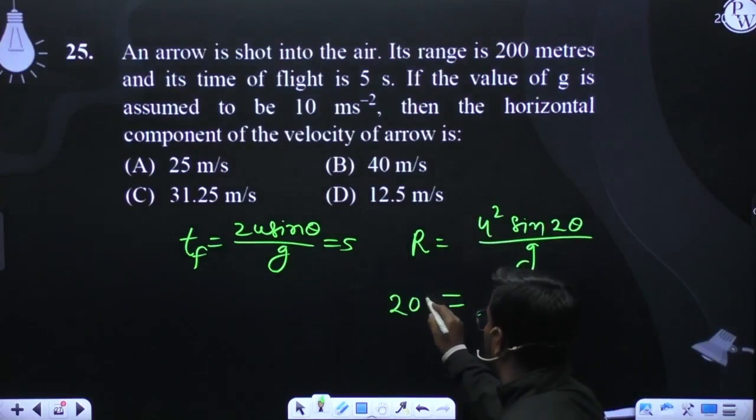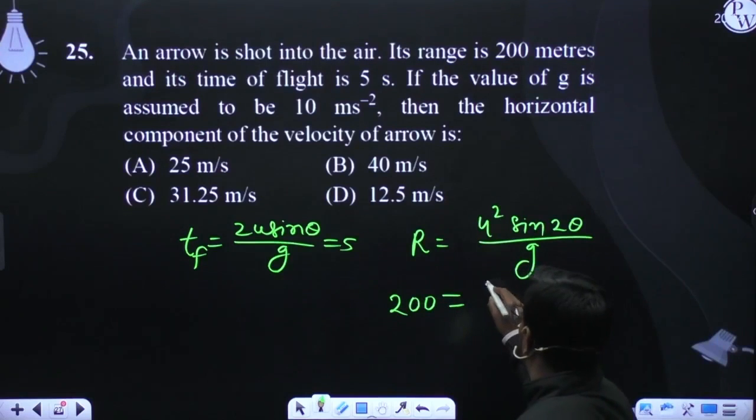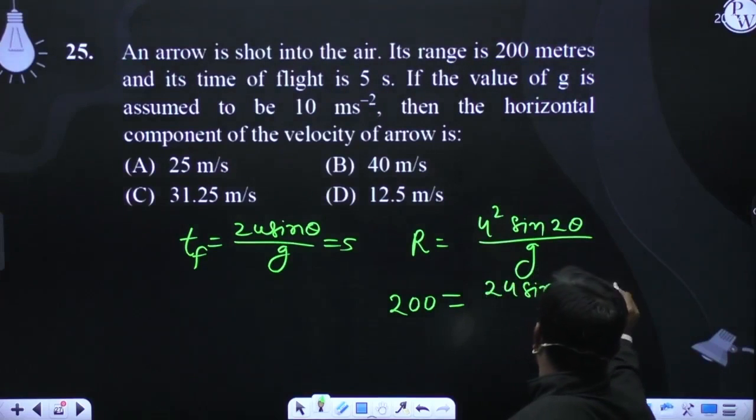R is 200. This is 2u sin theta u cos theta upon g.